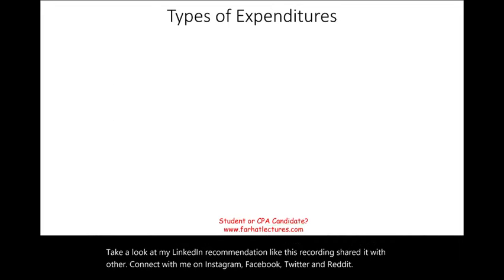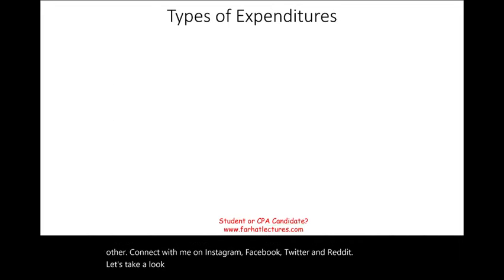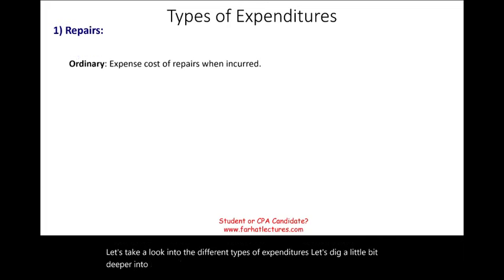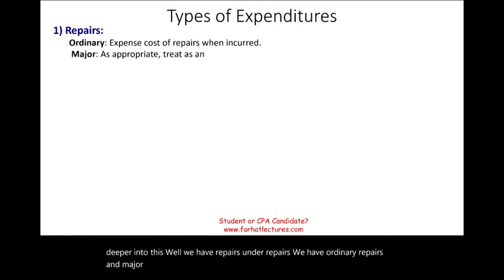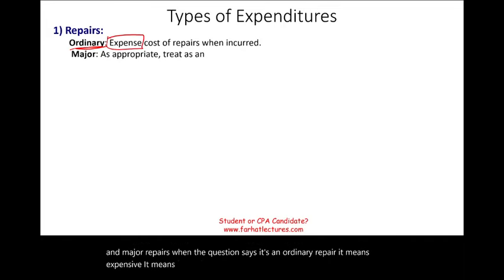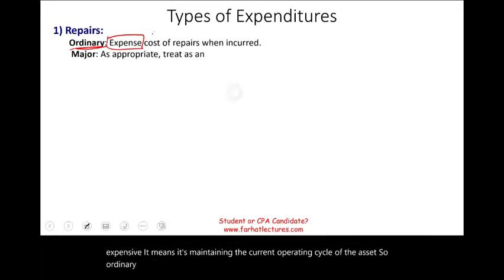Let's take a look at the different types of expenditures and dig a little bit deeper. We have repairs, and under repairs we have ordinary repairs and major repairs. When the question says it's an ordinary repair, it means expense — it means it's maintaining the current operating condition of the asset. Ordinary repairs, sometimes called minor repairs, are expensed.